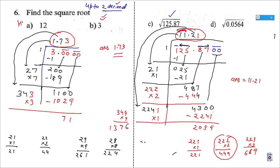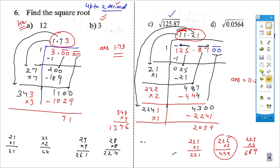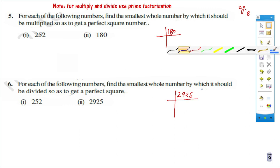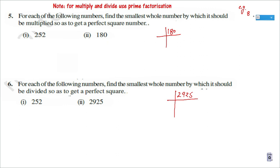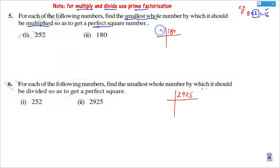I hope this is clear to you — classwork, homework. Now the question is very interesting and generally asked: find the smallest number which when multiplied makes the result a perfect square. For example, 8 times some number becomes 16, which is a perfect square, so the answer is 2. The method: do prime factorization. Dividing 180 by 2 gives 90. Dividing 90 by 2 gives 45. Dividing 45 by 3 gives 15. Dividing 15 by 3 gives 5. When 1 comes we stop.